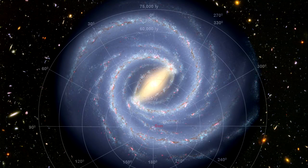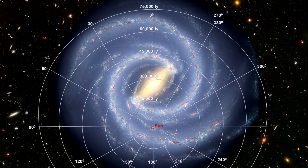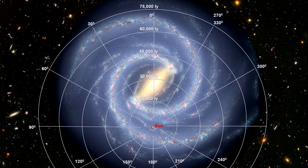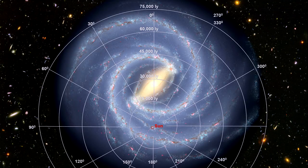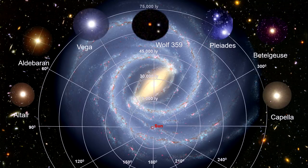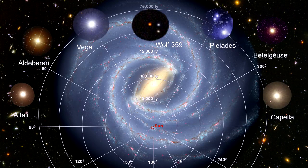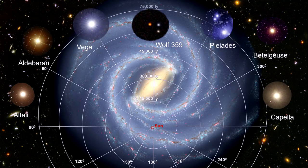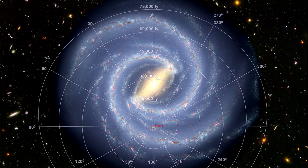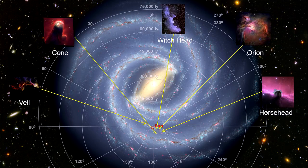If we lay a grid over the galaxy, we can locate some of the stars, nebulae, and H2 regions we have seen in this chapter. Actually, all the local neighborhood stars would fit into the red circle I used to locate our solar system. That would be stars like Wolf 359, Altair, Vega, Polaris, Capella, Aldebaran, the Pleiades, and Betelgeuse. They are all with us in the Orion Spur, as is the Orion, Horsehead, Cone, Witch's Head, Veil, and many other nebulae.